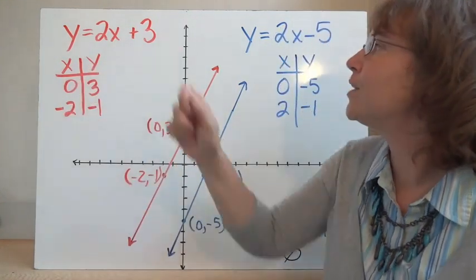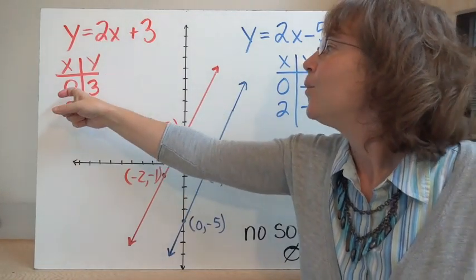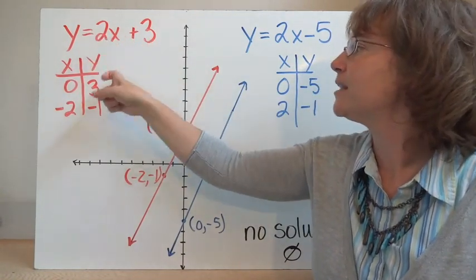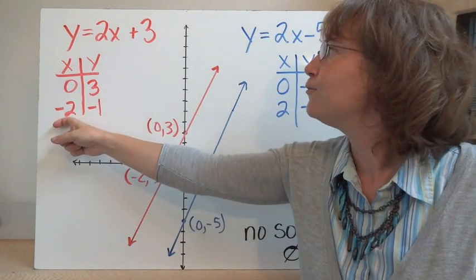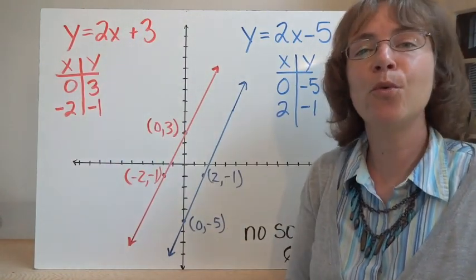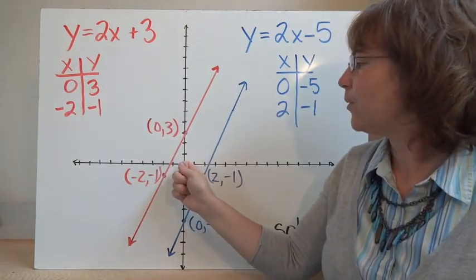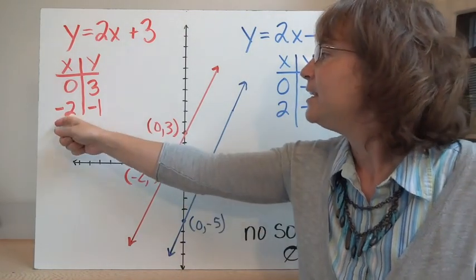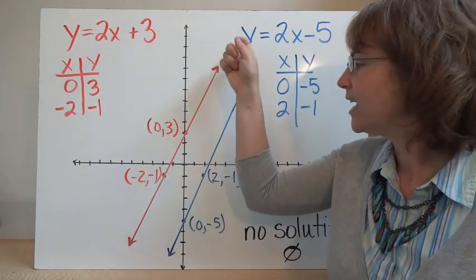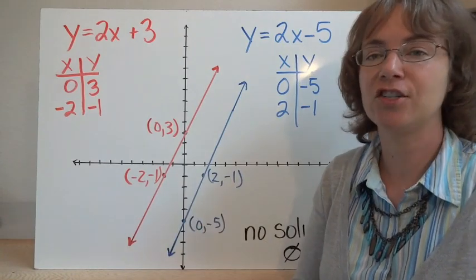Let's look at y equals 2x plus 3 and y equals 2x minus 5. For the first equation, choosing x equals 0: 2 times 0 plus 3 gives y equals 3, so the point is (0, 3). Choosing x equals negative 2: 2 times negative 2 is negative 4, and negative 4 plus 3 is negative 1, giving the point (negative 2, negative 1). I connect them with a straight edge to get my line.